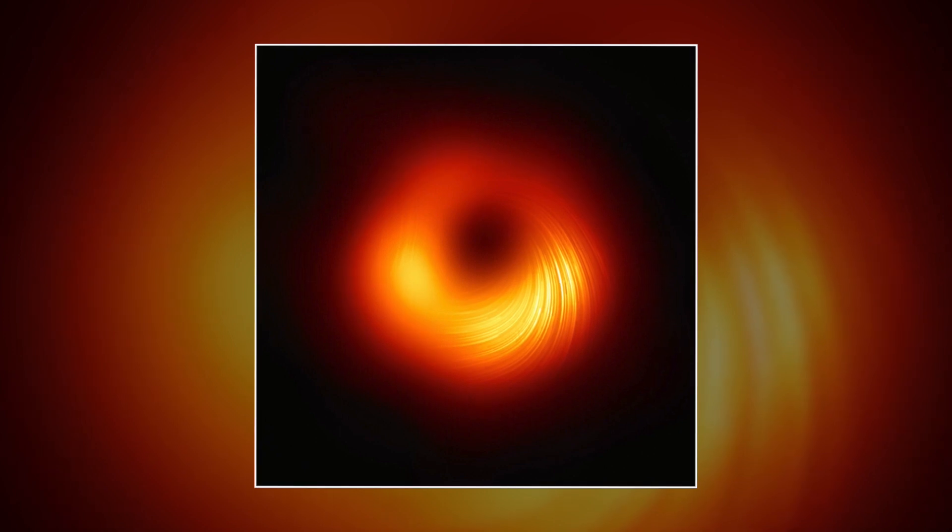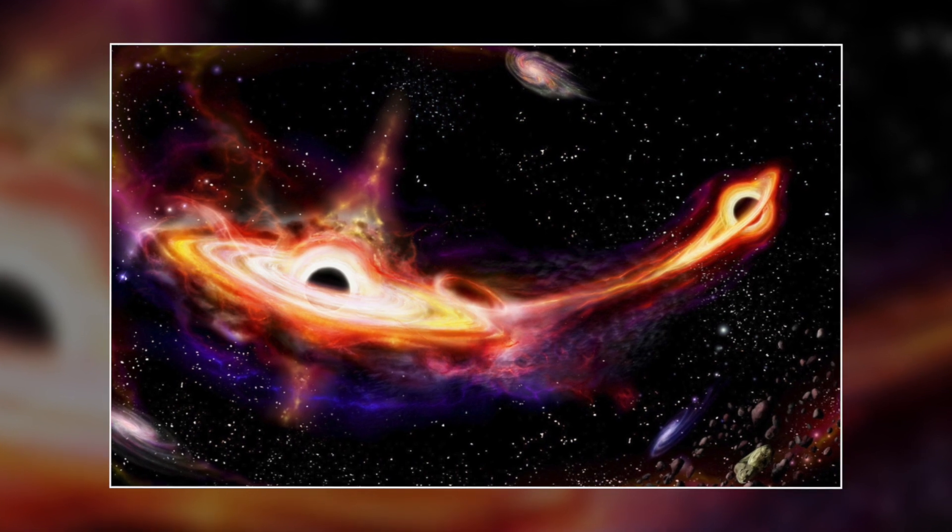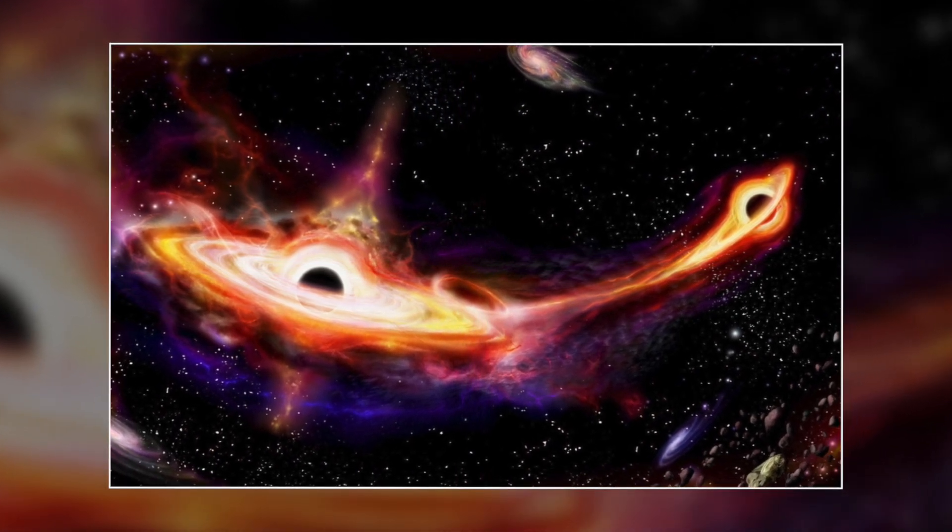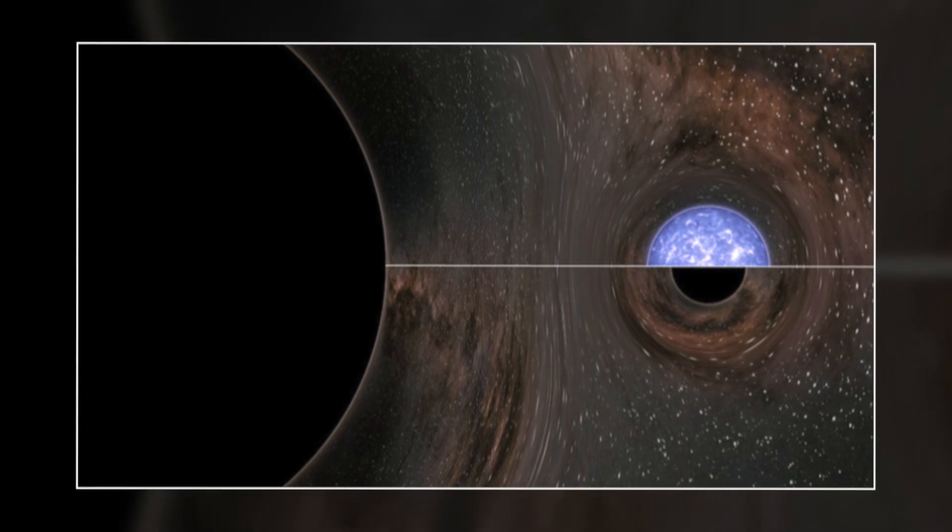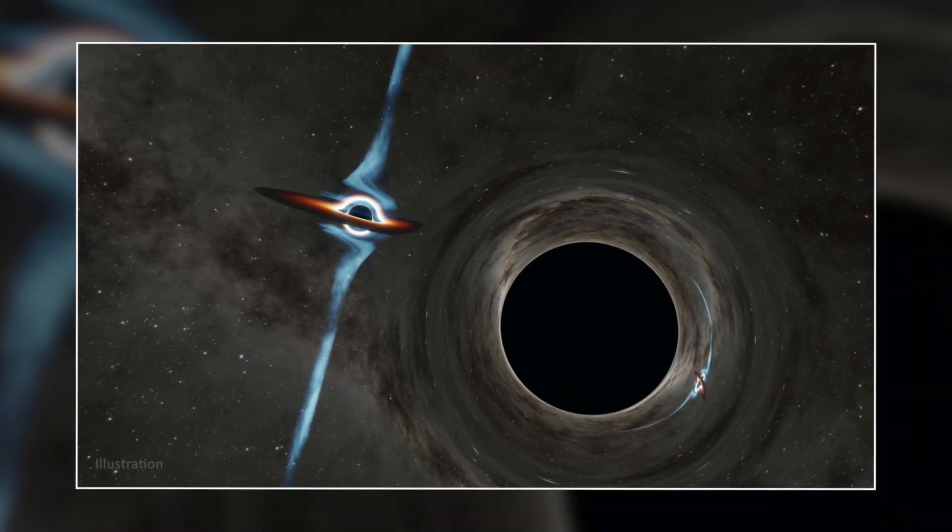M87 changed subtly on timescales of days. Now with Sagittarius A, it's changing in timescales of minutes, so it gets much trickier. We have to adapt the analysis to take into account that it's changing so quickly, he said.